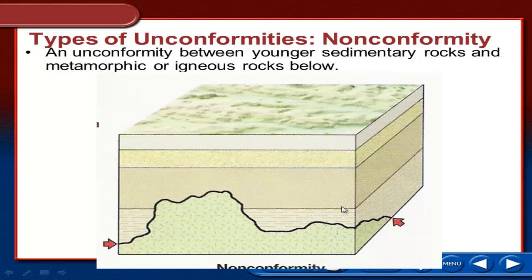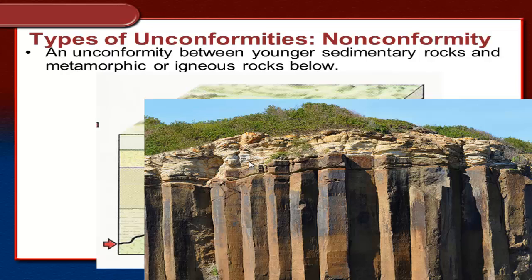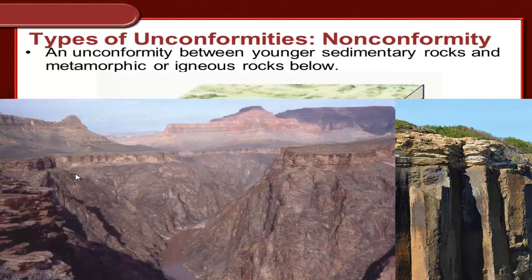You have igneous rocks underneath sedimentary rocks — that's a non-conformity. In real life, you might see basalt with sedimentary rock above it. At the Grand Canyon, we can see the Vishnu Schist, a metamorphic rock, and directly above it begins the sandstone. That tells us a great deal about what happened deep in the past — the Grand Canyon area was much, much different than what we see today.